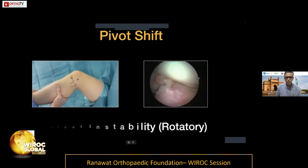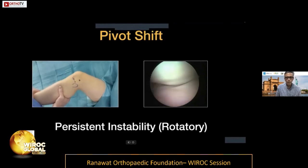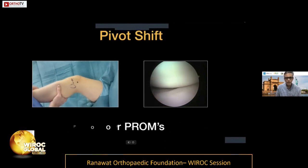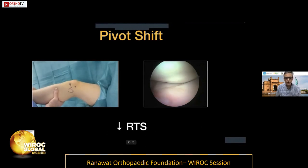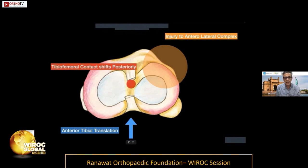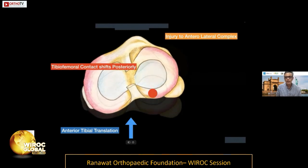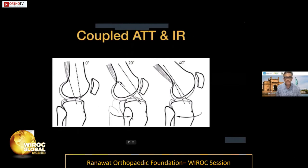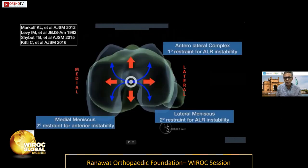Failure to restore the pivot shift is one of the main reasons patients will have poorer outcomes, persistent rotatory instability, and decreased rates of return to sport. When the tibia translates anteriorly, the tibiofemoral contact point shifts posteriorly and laterally, producing an abnormal rotatory instability. This coupled anterior tibial translation and internal rotation is what we need to tackle.